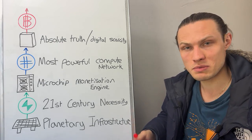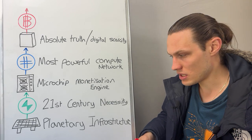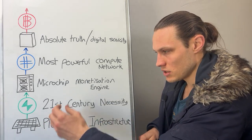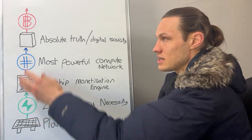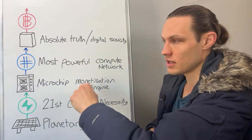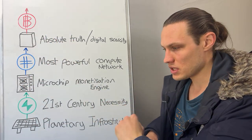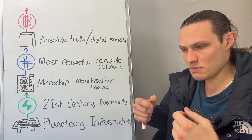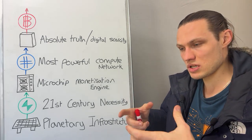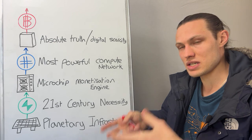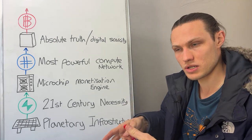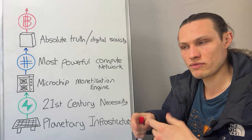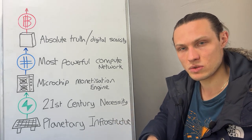What does Bitcoin do? It monetizes this industry. Electricity now has an economic value on the internet through Bitcoin mining, creating a circular economy — you can spend money producing energy, that energy converts into money or is sold to the local grid, and you've got that circular economy to continually reinvest and scale this planetary critical infrastructure.